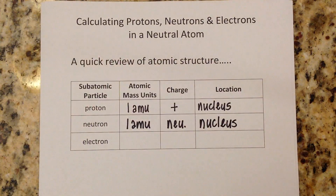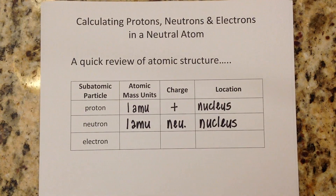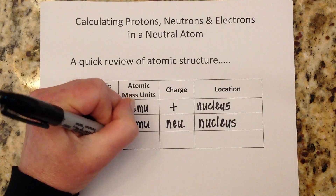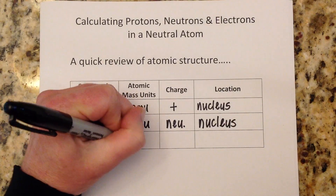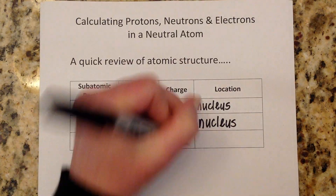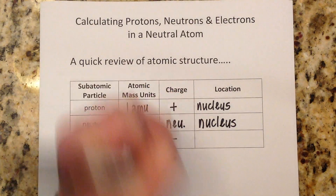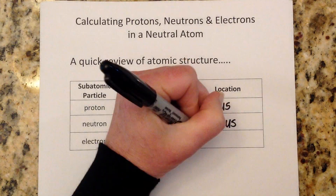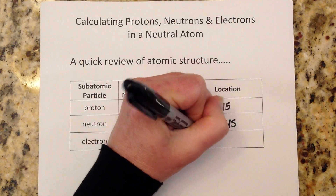And then we have electrons. Relatively speaking, we say that electrons have a mass of zero. They are negative, and they are located in what we like to call the electron cloud.